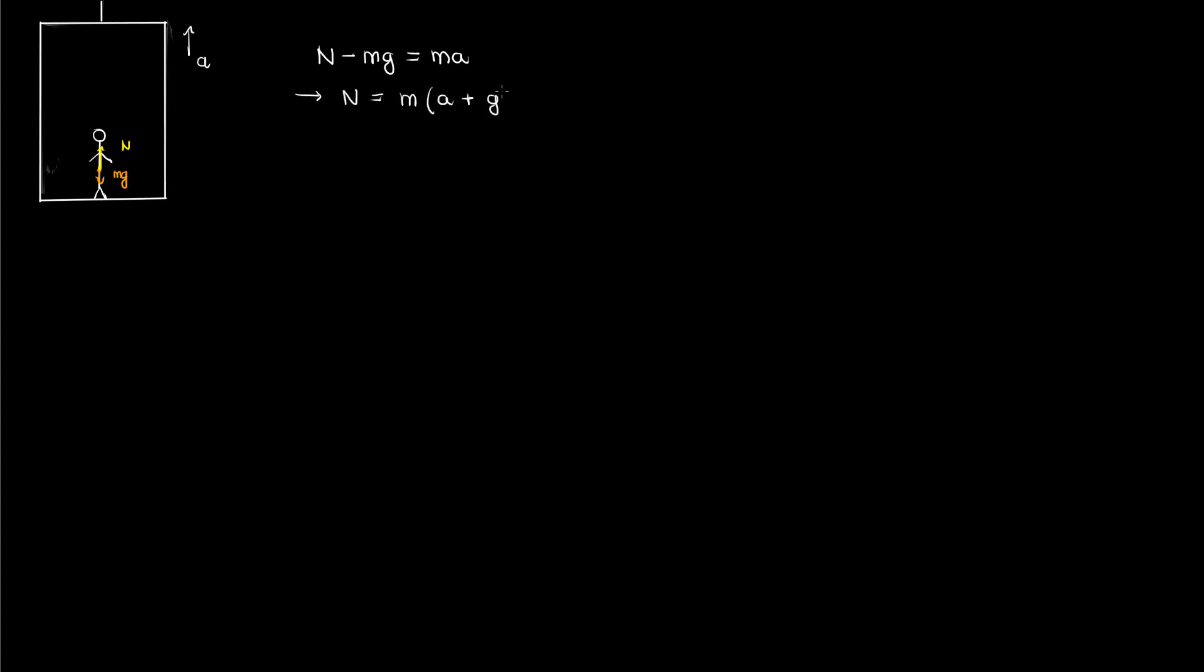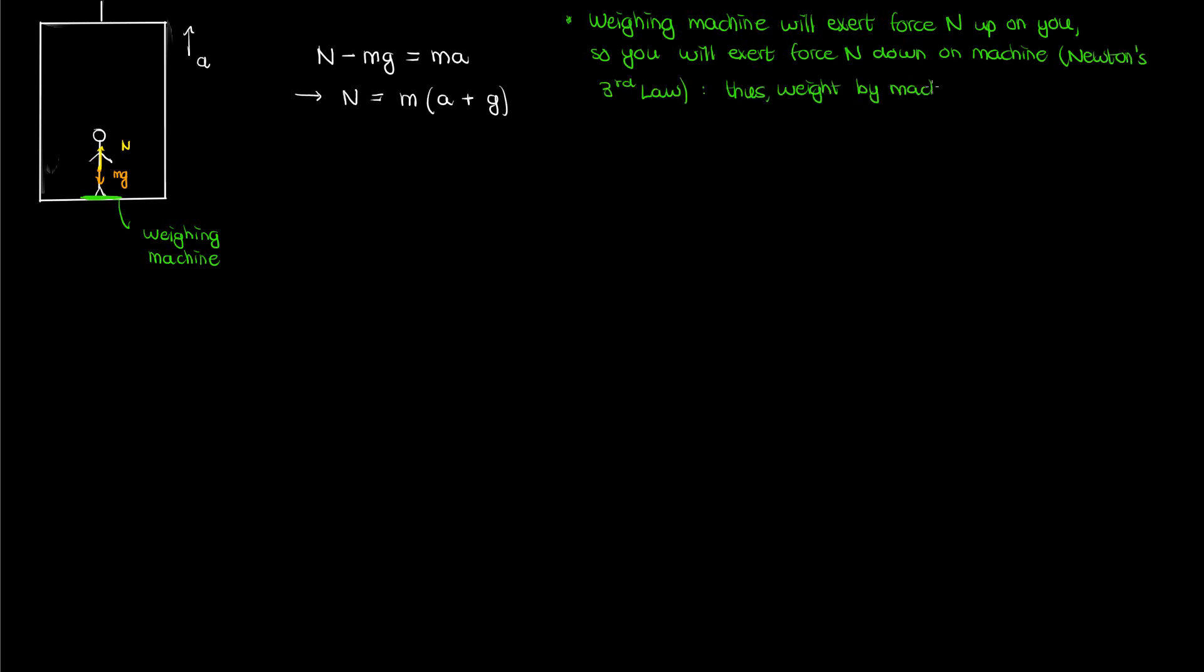This means that the normal force n is just your mass m times the sum of a and g. Now let's suppose that you're standing on a weighing machine in the elevator. The weighing machine will then be exerting this normal force n on you, so by Newton's third law, you'll be exerting an equal and opposite force on the weighing machine. This means that according to the weighing machine your weight won't just be mg, it'll be m times g plus a. So with this elevator problem in mind, let's examine two separate scenarios.